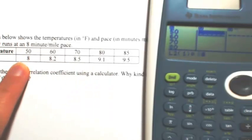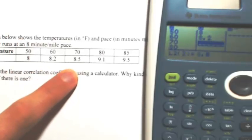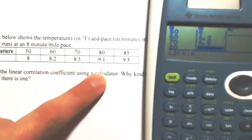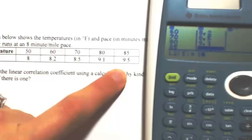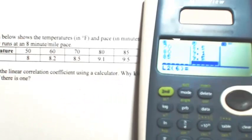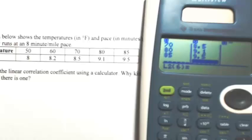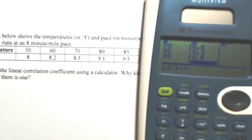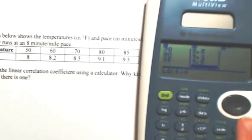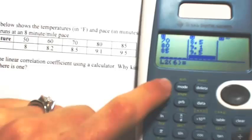In List 2, paired with 50 is 8, then 8.2, 8.5, 9.1, and 9.5. Once you've typed in all the lists, hit SECOND DATA to activate the stat part of the calculator.